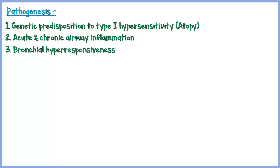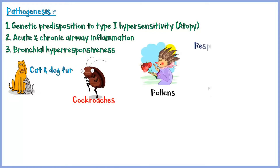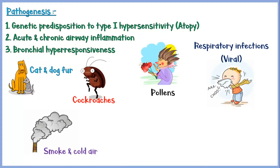These stimuli may vary among individuals and may not trigger the disease in every individual. Common ones are cat and dog fur, cockroaches, pollens of various grasses and trees, respiratory infections especially viral infections, smoke and cold air, and stress and exercise.